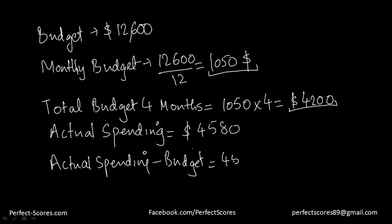So that would give us how much did the budget go over by. So that would be $4,580 minus $4,200. So that would be $380, which is nothing but our answer option A.